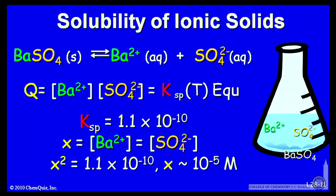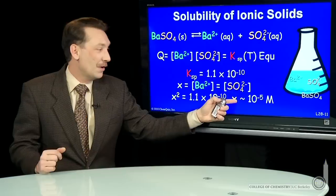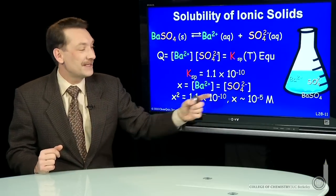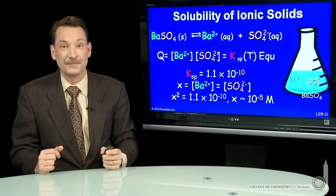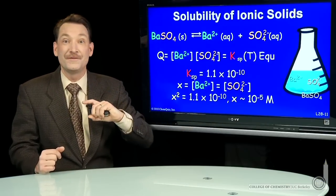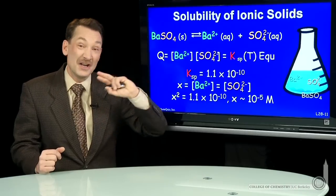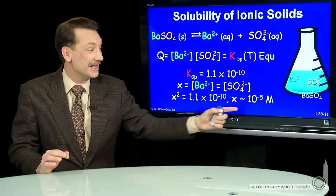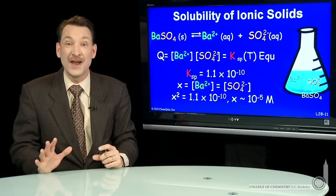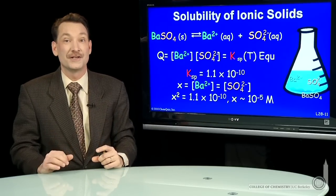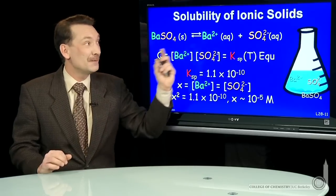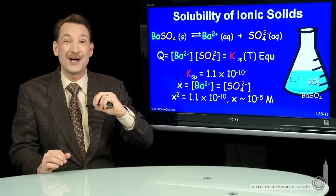Then x squared has to equal 1.1 times 10 to the minus 10, the solubility product. So that's an x of about 10 to the minus fifth molar—very few molars. Just a hundred thousandth of a mole dissolves in about a liter of water. So very low concentration. This is a solubility product for a sparingly soluble solid.